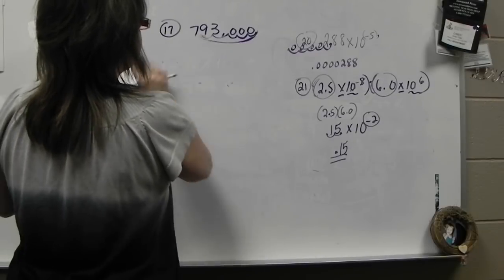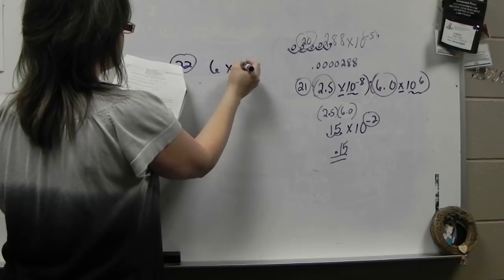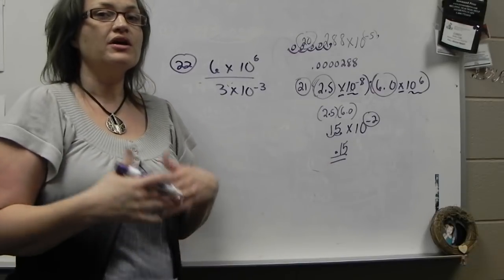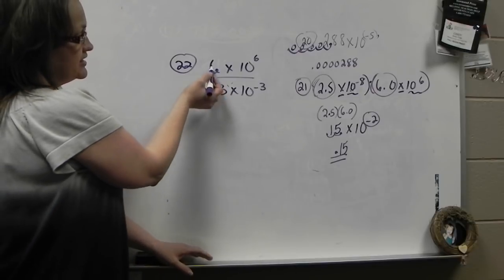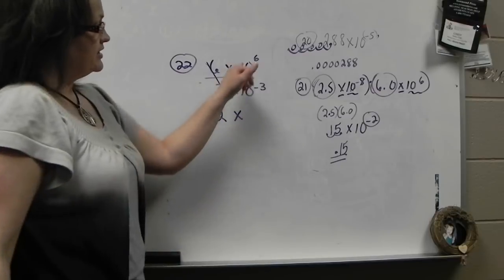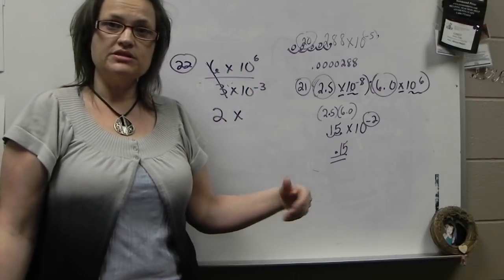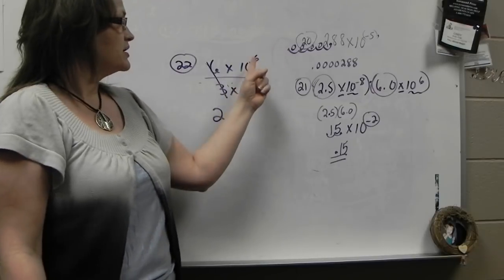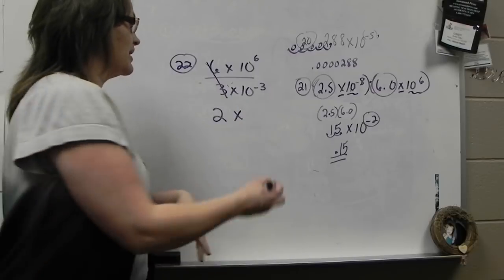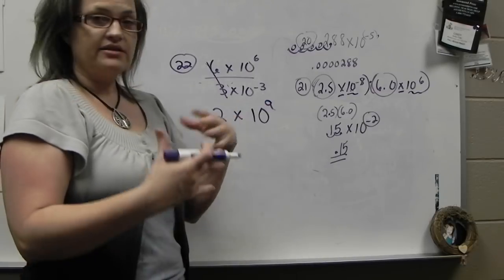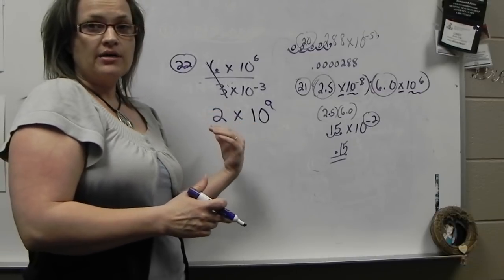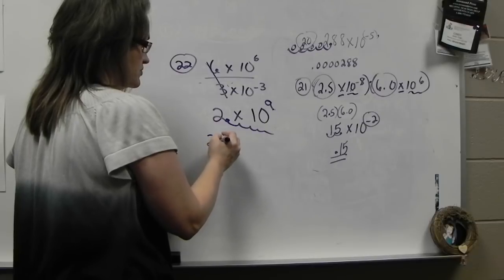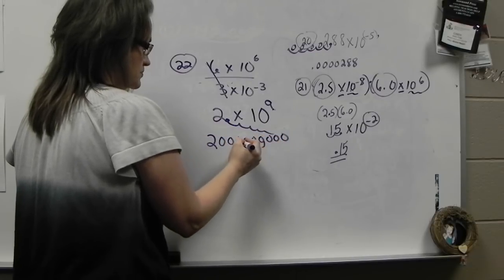Number 22 is the division problem. The idea is to practice the exponent rules: divide 6 by 3 to get 2. Then dividing with like bases, the rule is you subtract the exponent — 6 minus negative 3. When dividing like bases, subtract top minus bottom: 6 minus negative 3 makes a plus 3, or 9. So that's 2 times 10 to the 9th. 10 to the 9th is a large number — that's 9 zeros. Times the 2, it moves the decimal 9 places to the right, basically adding 9 zeros onto the 2.